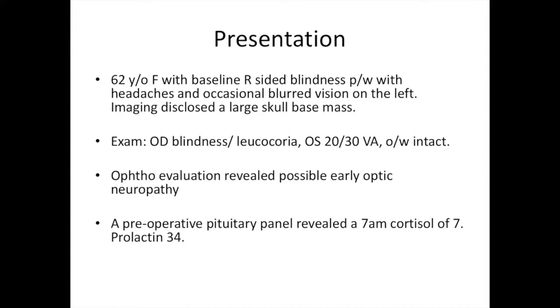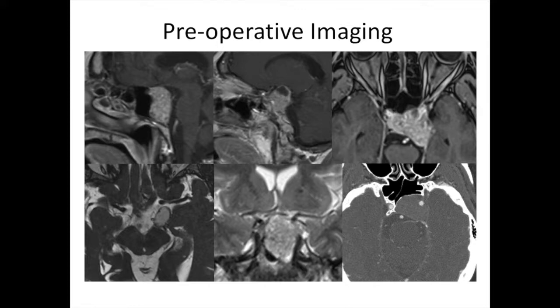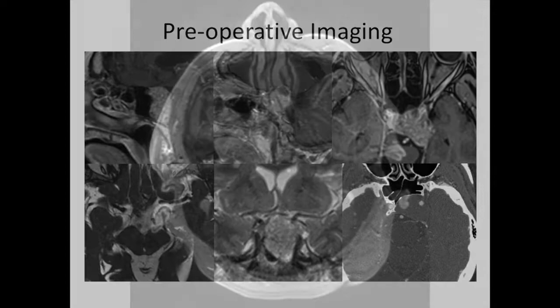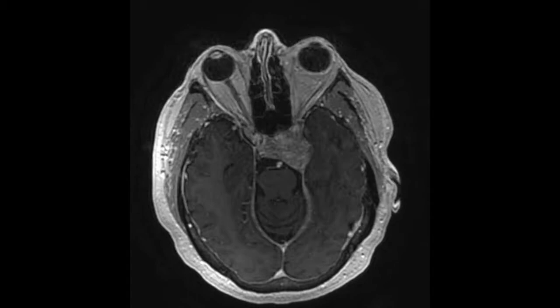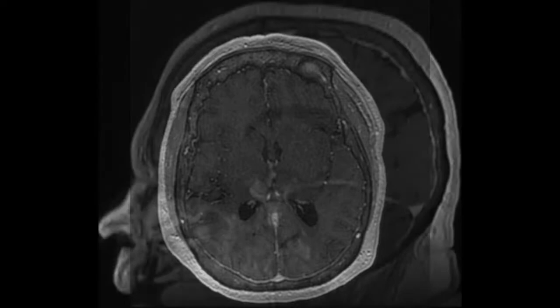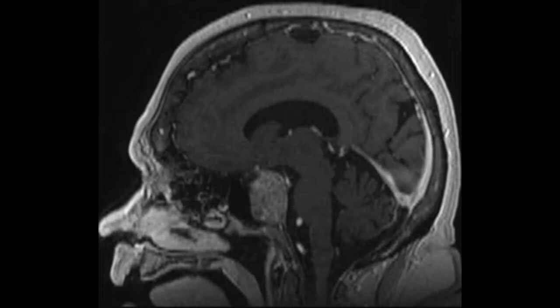Formal ophthalmological evaluation revealed possible early optic neuropathy on the left. A preoperative pituitary panel revealed a mildly decreased 8 AM cortisol and a prolactin of 34. Imaging disclosed a contrast-enhancing mass that expanded the pituitary fossa and extended into the clivus, as well as the left ambient cistern and the left cavernous sinus. The imaging characteristics were more consistent with a pituitary adenoma with right-sided displacement of the normal gland.